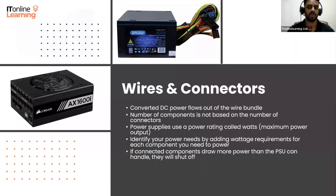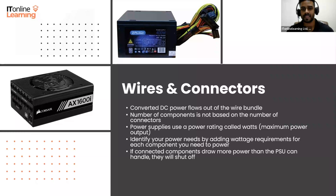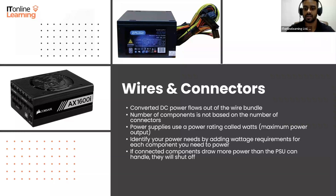The converted DC power flows out through the power supply's wire bundle, which is on the opposite side of the unit. The wire bundle contains a variety of connectors that plug into components and provide them with the correct voltage of DC power — 12 volts, 5 volts, and 3.3 volts. You'll need to memorize these three voltage levels as they are crucial to your courseware.